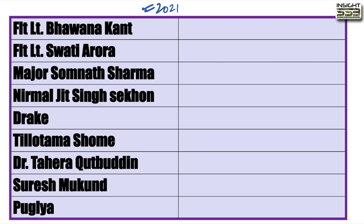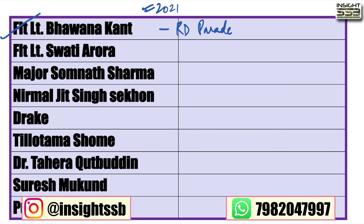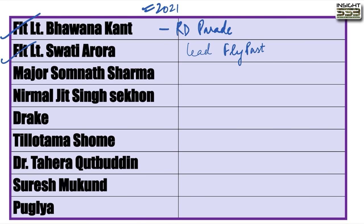2021 important achievements: Flight Lieutenant Bhavna Kanth became the first female fighter pilot to lead the Republic Day parade contingent. Flight Lieutenant Swati Arora became the first woman to lead a fly past, flying an Mi-17 in V5 formation. The first PVC (Param Vir Chakra) was given to Major Somnath Sharma. Nirmaljeet Singh Sekhon is the only Indian Air Force personnel to receive the PVC (posthumously). Drake received the Artist of the Decade Award at the 2021 Billboard Music Awards.